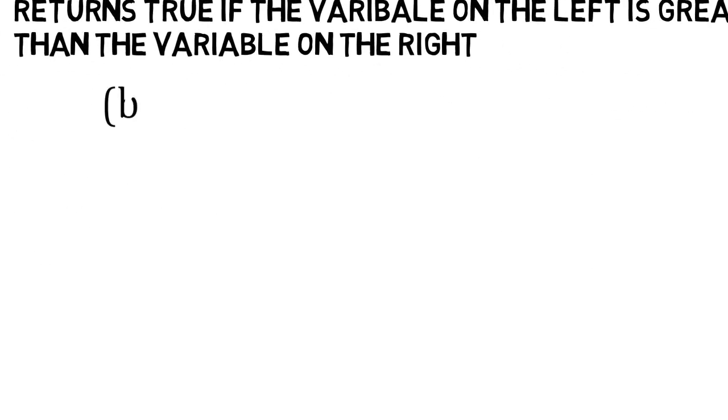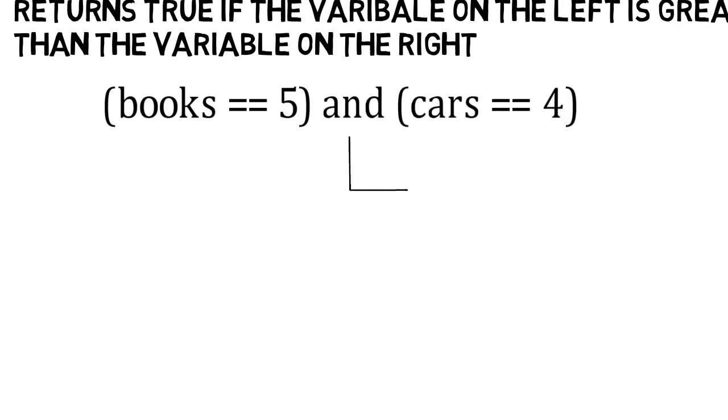For example, books is equal to 5 and cars is equal to 4. This would return false, because books does not equal 5. Even though cars equals 4, both statements need to be true to return true.